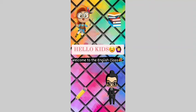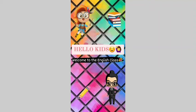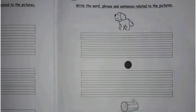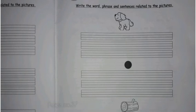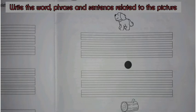Hi kids, welcome to the English class. Now take out your English worksheet and open page number 37. Here you have to write the word, phrase, and sentence related to the picture. So the first one is 'dog.'